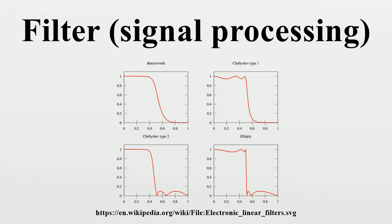Distributed element filters are constructed out of components made from small pieces of transmission line or other distributed elements. There are structures in distributed element filters that directly correspond to the lumped elements of electronic filters, and others that are unique to this class of technology.